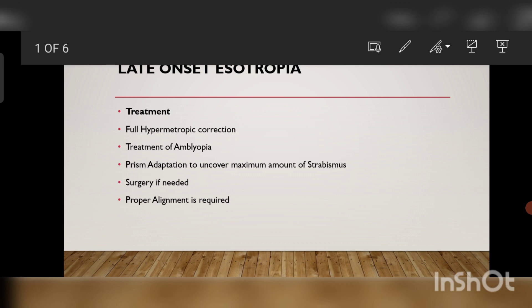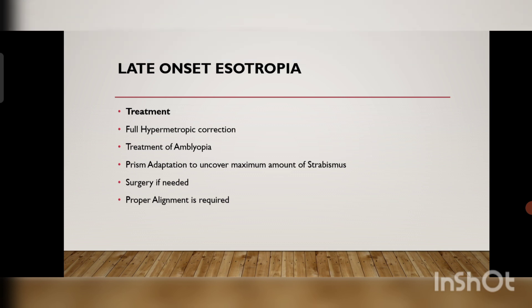The treatment option is to give a full hypermetropic correction if the child has hypermetropia. Do a cycloplegic refraction and give the full hypermetropic correction. Simultaneously you have to treat the child for amblyopia — that is very important, because if the amblyopia can be treated, your job is done.